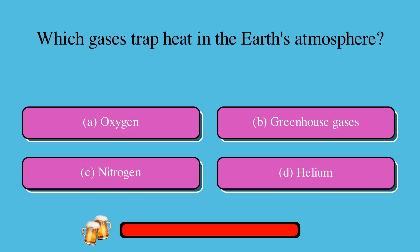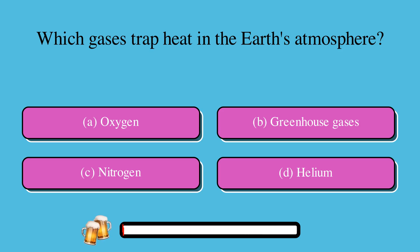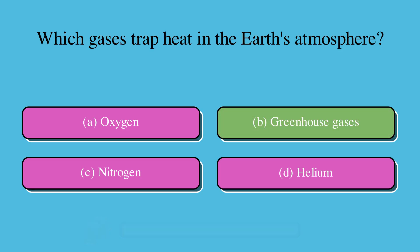Which gases trap heat in the Earth's atmosphere? A. Oxygen, B. Greenhouse gases, C. Nitrogen, or D. Helium? The correct answer is B. Greenhouse gases.